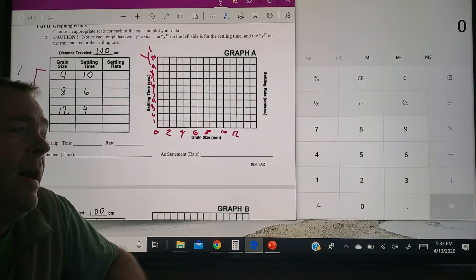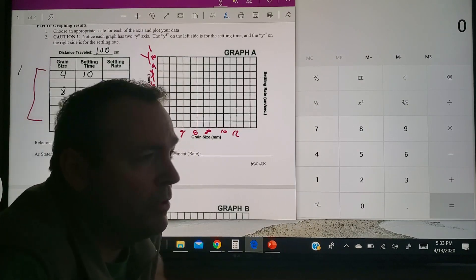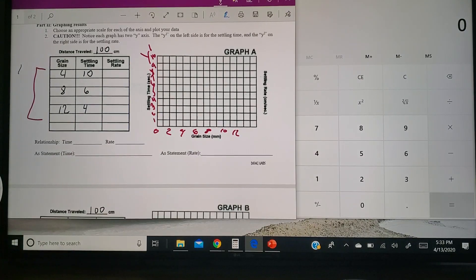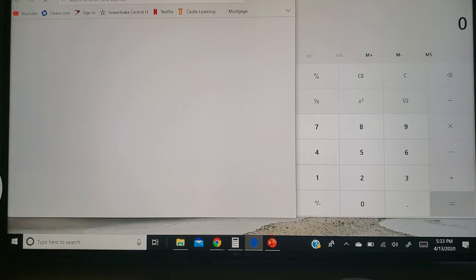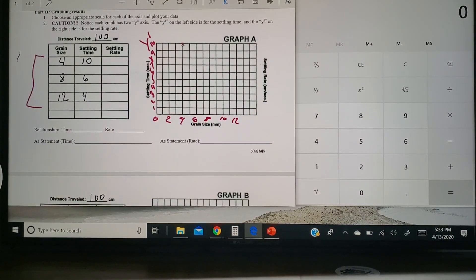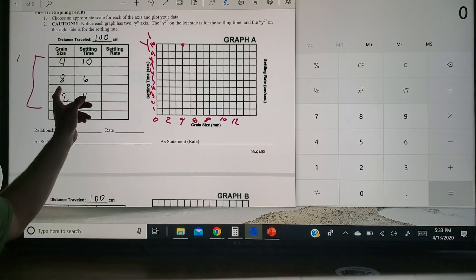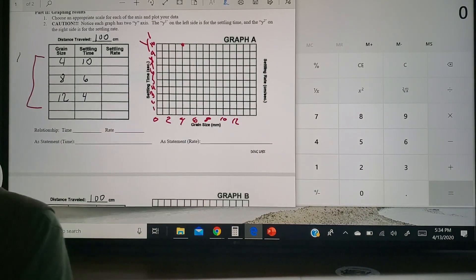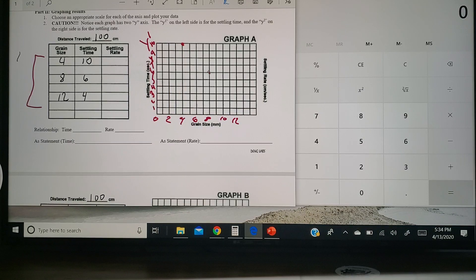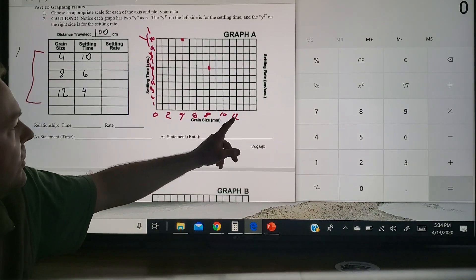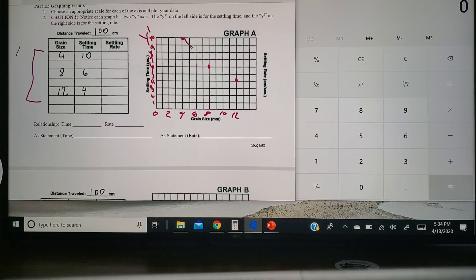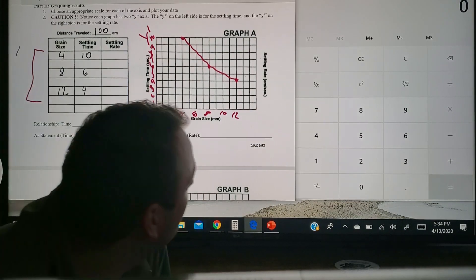And now you're simply going to plot that in a certain color, or you could have used a certain symbol. So for 4, you had a 10, so you'd go 4 up to 10. That was your first plot up here. Then you would go 8, got a 6. 8 up to a 6. And then you would have said, alright, well 12 took 4 seconds. Right about there. Connect it, and you got a line going down, an inverse relationship there.